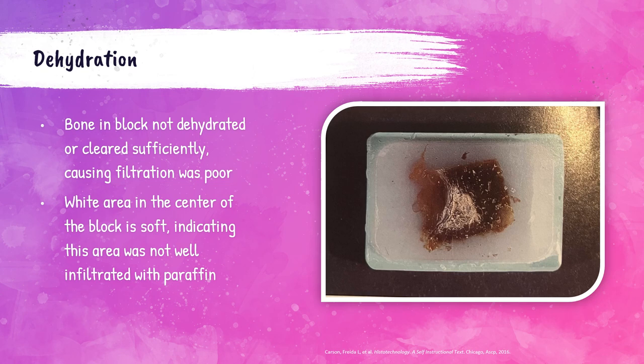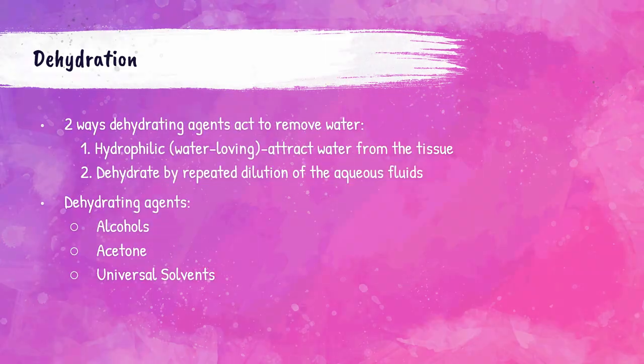This is an example of a bone in a block that was not dehydrated properly, resulting in it not being cleared properly and causing insufficient infiltration. The white area in the center of this block is soft and mushy, meaning it was not properly infiltrated with paraffin.